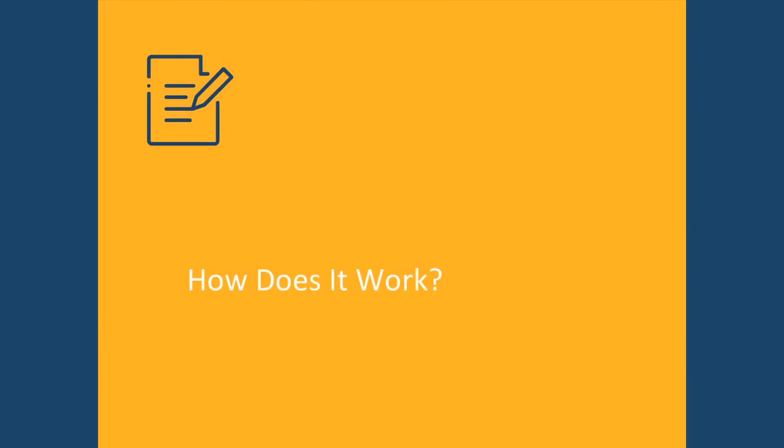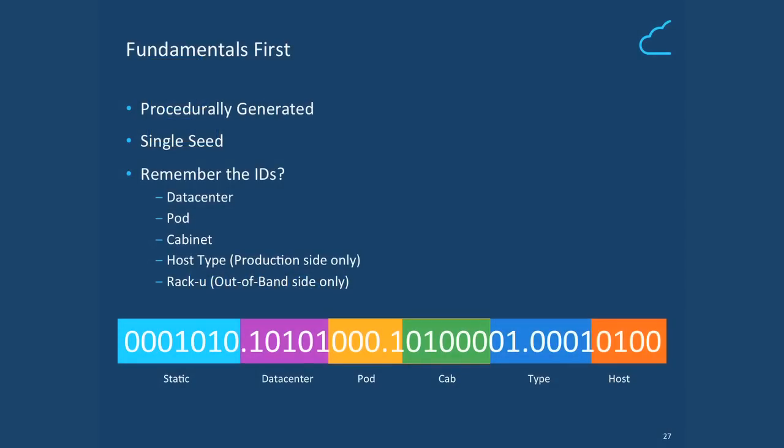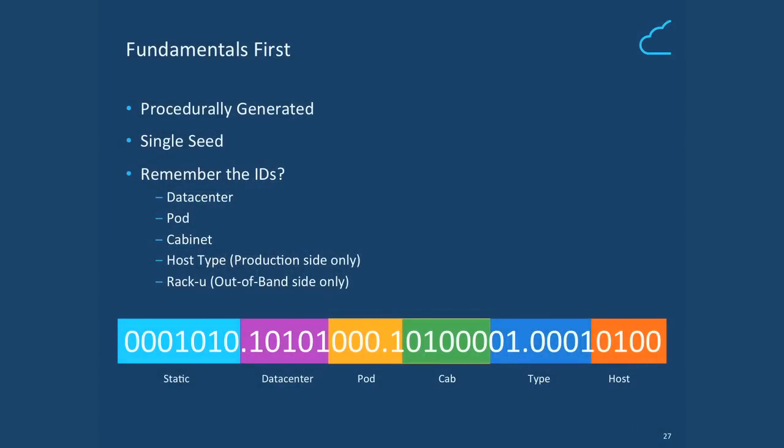So how does it work? Fundamentals first. Everything is procedurally generated. We've got IDs for everything, and formulas for everything. Given a single seed, we can calculate every bit of information — every aspect of a switch that goes into our production network. We have IDs for data center, pods, cabinets, host types on the production side, and rack use on the out-of-band management side. And all of these pack very nicely into IP addresses.